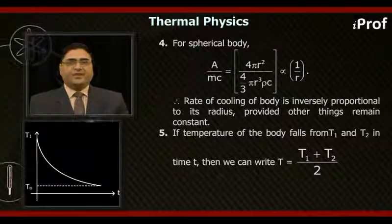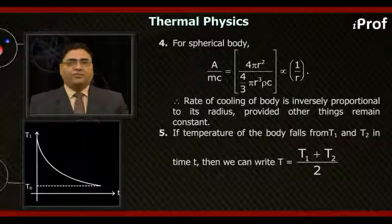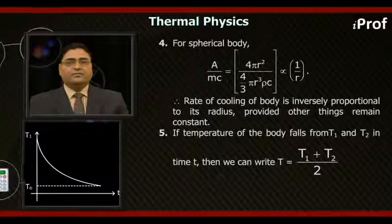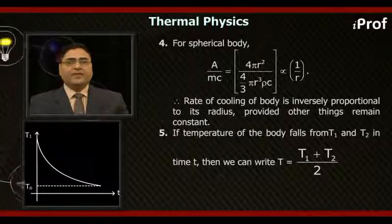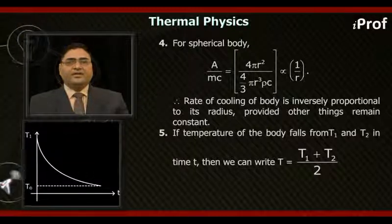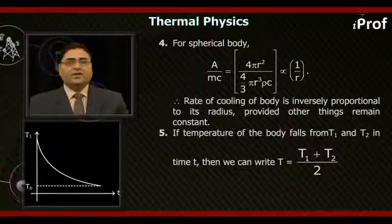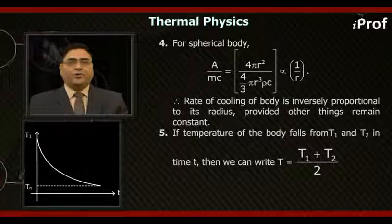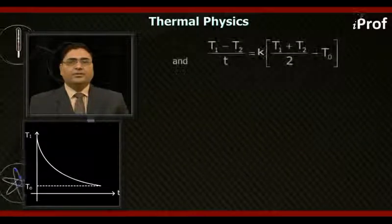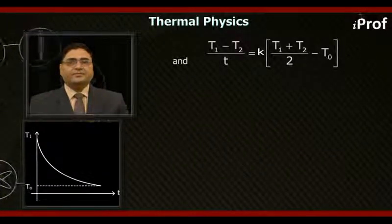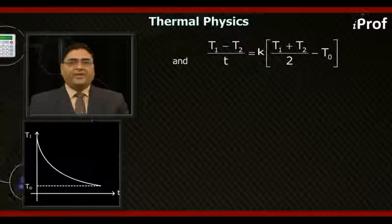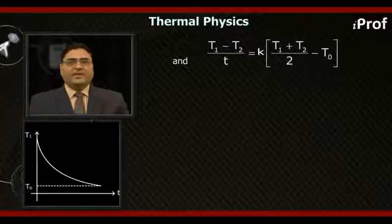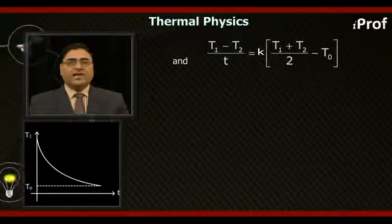Fifth, if temperature of the body falls from T1 to T2 in time t, then we can write T equal to T1 plus T2 upon 2 as average temperature. And T1 minus T2 upon t equal to K times T1 plus T2 upon 2 minus T0.